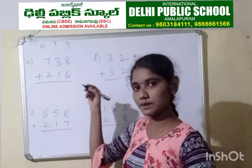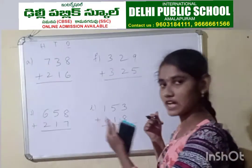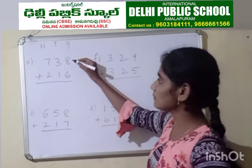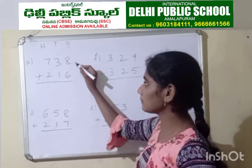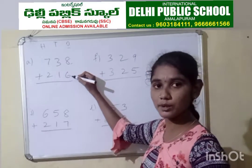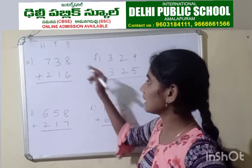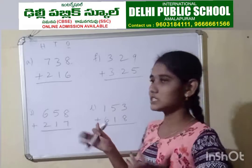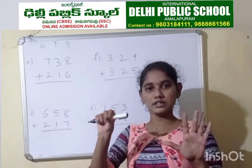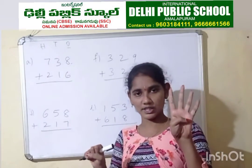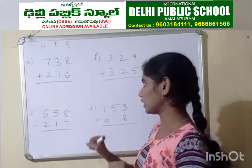The 1's place is the smallest place. We will always start from the 1's place. Here the numbers are 8 and 6. The top number you keep in mind and the bottom number you take that many fingers. So here keep 8 in mind and take 6 fingers. Count 8 after: 9, 10, 11, 12, 13, 14.